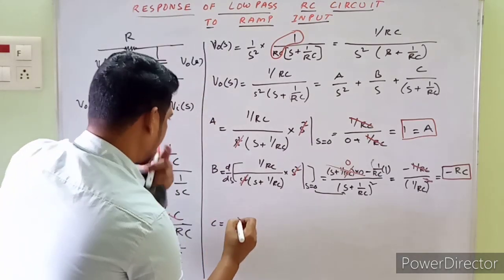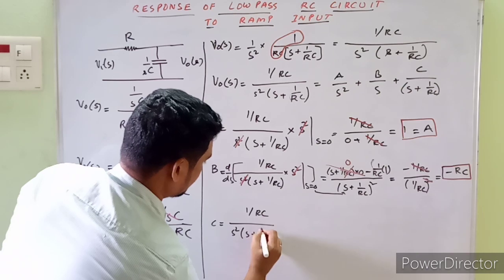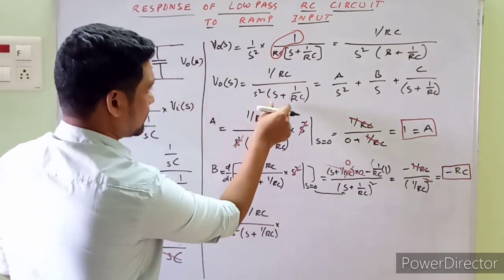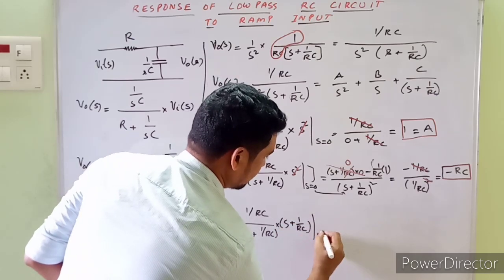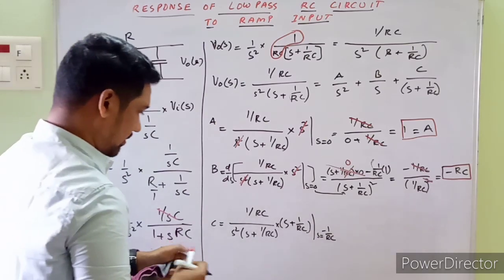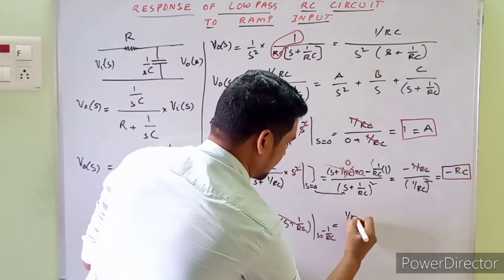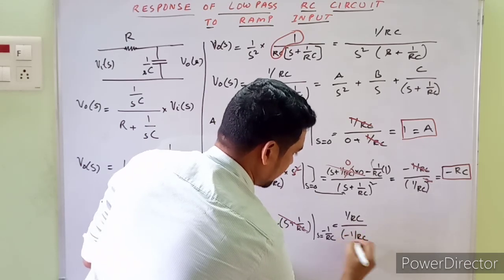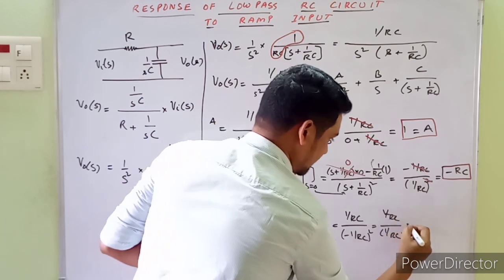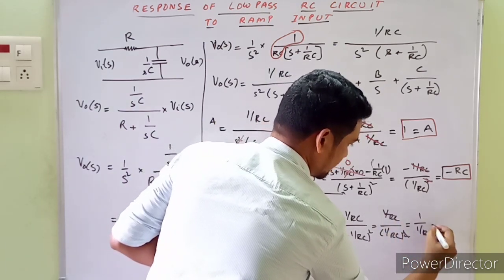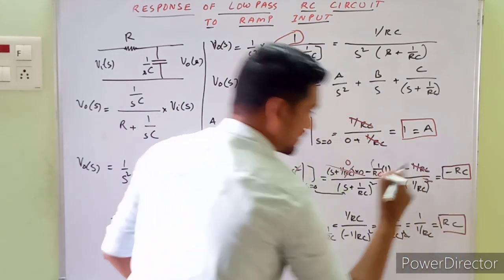To evaluate C, multiply both sides by (s + 1/(RC)) and substitute s = −1/(RC). The (s + 1/(RC)) term cancels. In the numerator we have 1/(RC), and in the denominator we have s² evaluated at s = −1/(RC), which gives [1/(RC)]². Cancelling 1/(RC), we get C = RC.